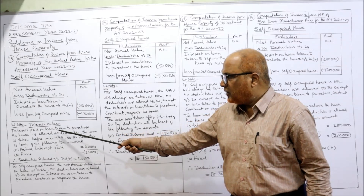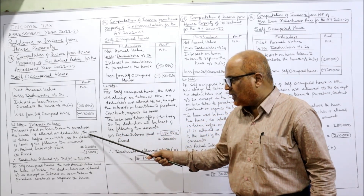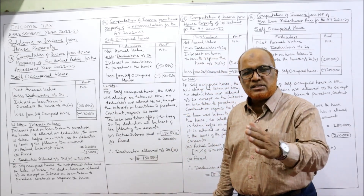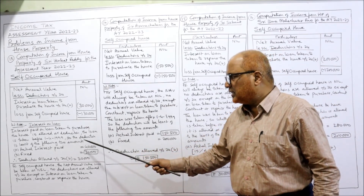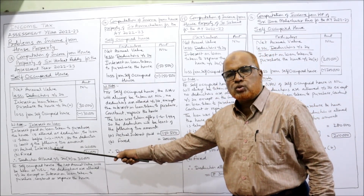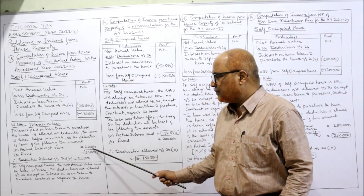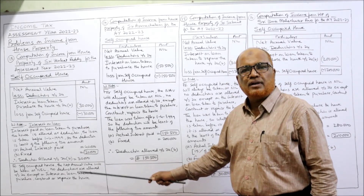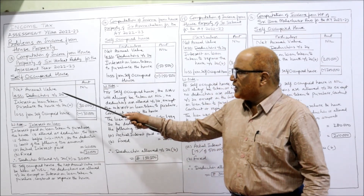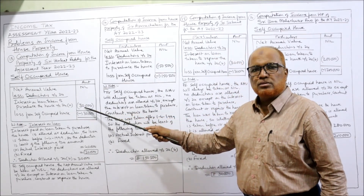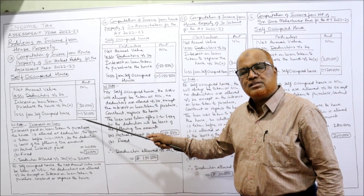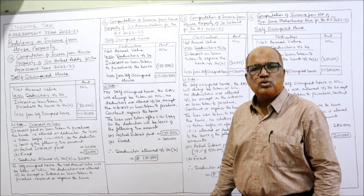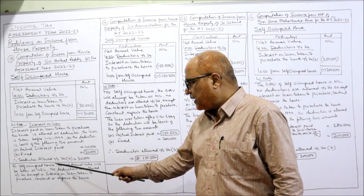Here, interest paid on loan taken to purchase the house is allowed as deduction. The loan is taken before 1-4-1999 — remember this date. So the deduction is the least of: actual interest paid ₹40,000 (given in the problem) or the fixed ceiling given by the Income Tax Act ₹30,000 — whichever is least, ₹30,000. So ₹30,000 will be allowed as deduction. NAV 0 minus ₹30,000 = minus ₹30,000. So there is a loss from self-occupied house of ₹30,000.